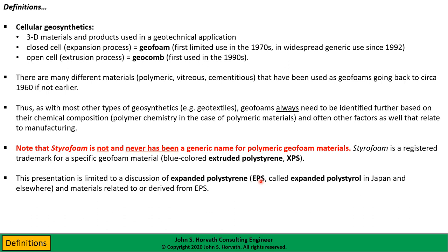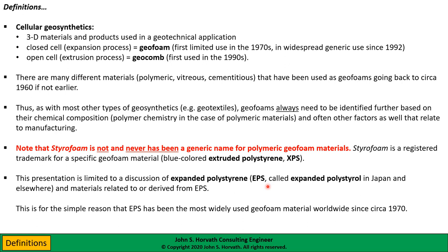This presentation is limited to a discussion of what we call expanded polystyrene, or EPS — also called expanded polystyrol in Japan and perhaps other countries. I'm also going to talk about some materials related to or derived from EPS. The simple reason I'm devoting this presentation exclusively to EPS is that it is the most widely used geofoam material around the world for the last 50 years. For the vast majority of projects in which geofoams are used over many decades, that material is going to be either expanded polystyrene or something derived from or related to it.